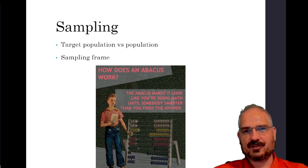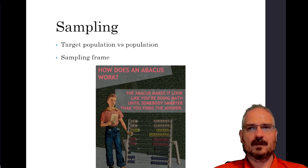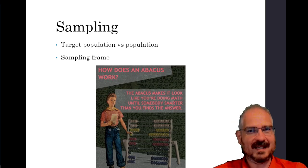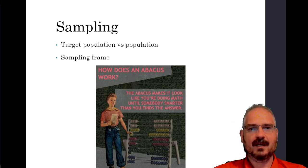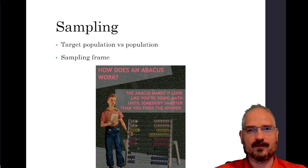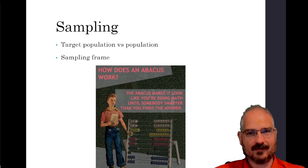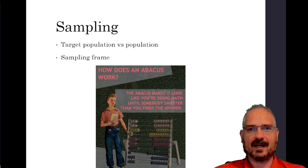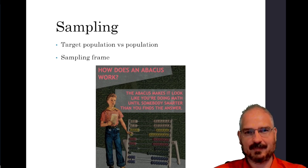We're going to draw a sample of say a thousand people. To do that we need what's called a sampling frame — a list of all the elements in our target population, or at least we want it to be. So there might be a really good sampling frame for all voters in Georgia; maybe we can contact the state and get a list of every single registered voter with their phone number and email address, and find some way to sample a thousand people from that list.